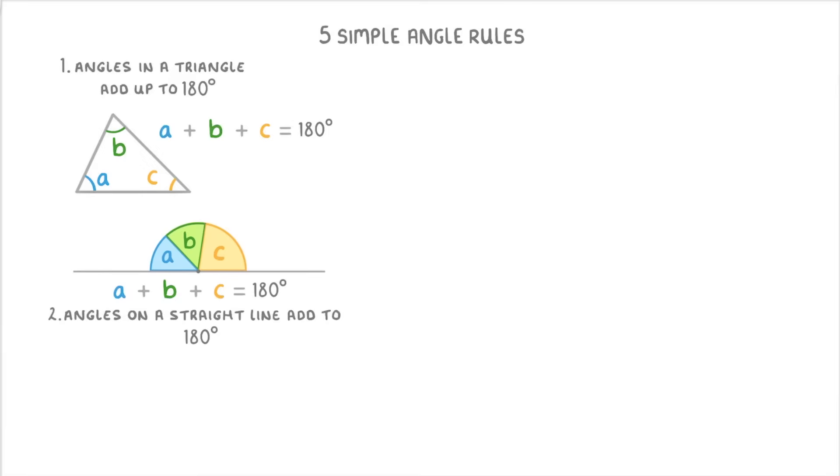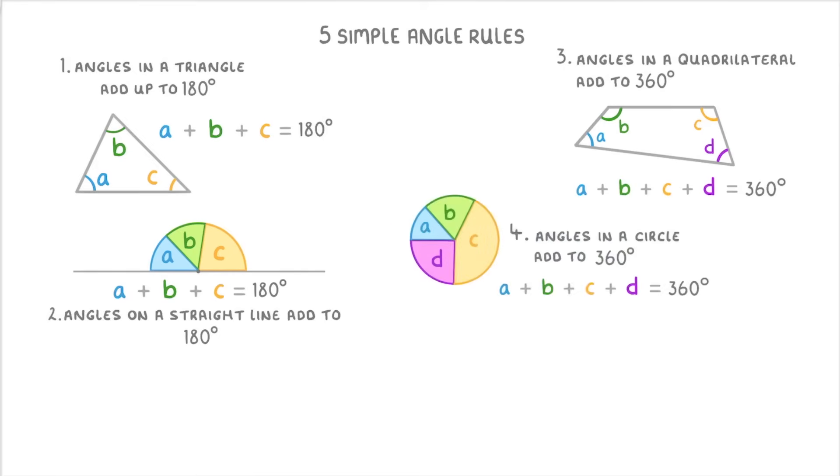So to sum up the video so far, we've seen five rules. Rule 1 was that the angles in a triangle add to 180 degrees. Rule 2 was that the angles on a straight line add to 180 degrees. Rule 3 was that the angles in a quadrilateral add to 360 degrees. Rule 4 was that the angles in a circle add to 360 degrees. And rule 5 was that isosceles triangles have two equal angles because they have two equal sides.